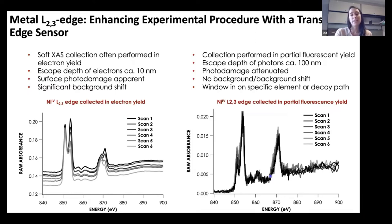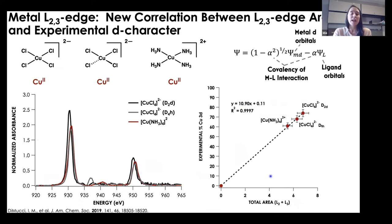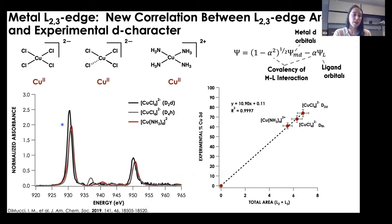With this technique in hand, we set out to redo what Ed Solomon had done — creating a standard correlation curve by looking at those two copper tetrachloride species in D2d and D4h geometry, adding one additional compound: the copper tetrakis thiolate species. Here I've shown the L-edges for these three standards; as we move through the series, we see a change in total L-edge intensity. Just as Ed Solomon did, we correlate that total L-edge intensity back to the experimental percent copper 3d character, giving a nice correlation between total L-edge area and experimental percent d character.